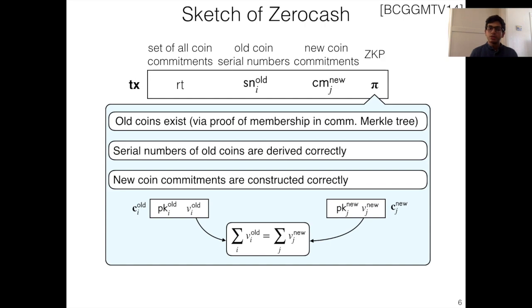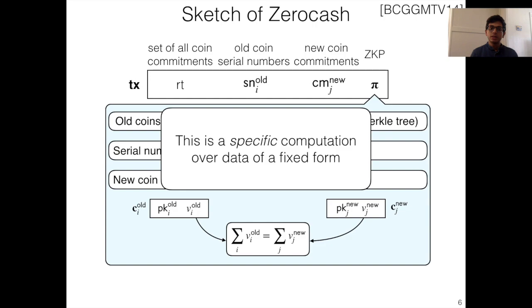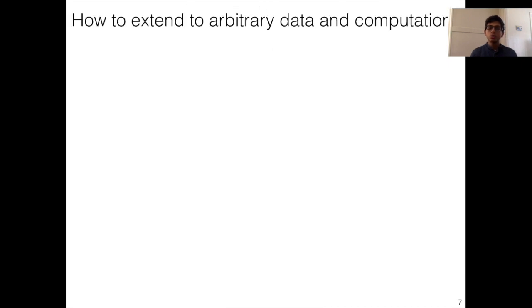Okay, this is a very high-level sketch of Zerocash. The key thing for us to take away is that this is actually checking a specific computation over data of a specific form. In our case, the data is just integer values, and the computation that we're checking is the value conservation predicate, that value is conserved going in and out of the transaction. Okay, so from this viewpoint, let's try and see how we can extend to achieving arbitrary computation over arbitrary data.